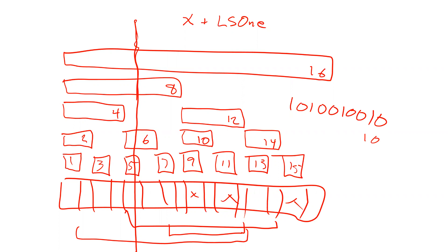If I add that on, the next thing I get — if I were to add the least significant 1 to that — I would end up with 1,0,1,0,0,1,0,0,1,0,0. And now the least significant 1 of that is 4 (1,0,0), and so on. When you actually want to look up a value, we're going to do the opposite: take the number and subtract off the least significant 1 until we're down to 0.